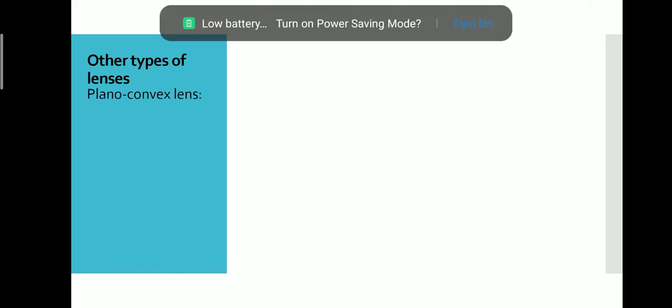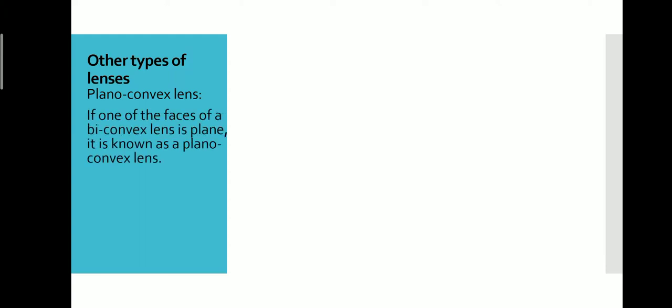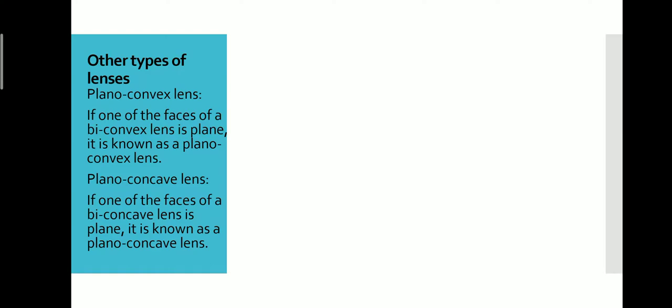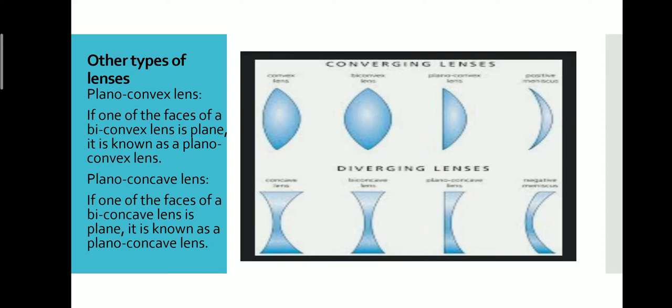Other types of lenses are the plano-convex lens. If one of the faces of a convex lens is plane, it is known as a plano-convex lens. Another type is the plano-concave lens — same thing: if one of its faces is plane, then it is a plano-concave lens. Here, one surface is plane and another one is bulged out or curved inside.